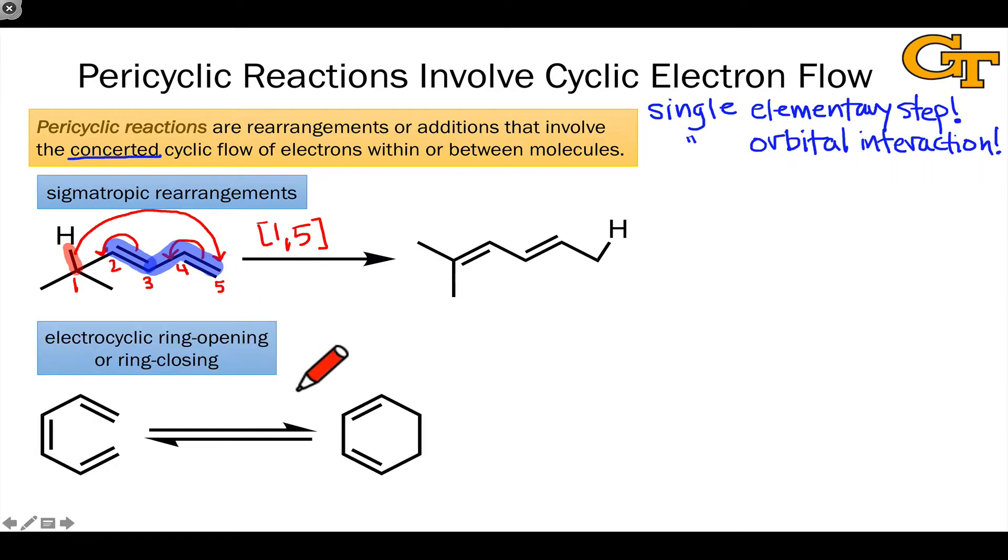In electrocyclic ring opening or ring closing, a pi bond is converted into a sigma bond through cyclic electron flow. Cyclic molecules with this pattern of a pi system linking two sp3 hybridized carbons engaged in a sigma bond with each other can actually open using reverse cyclic electron flow like this. And this is what we call electrocyclic ring opening.